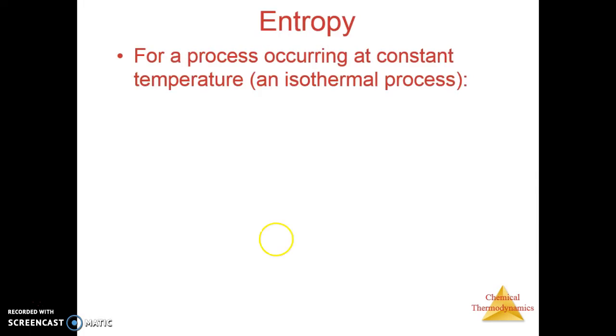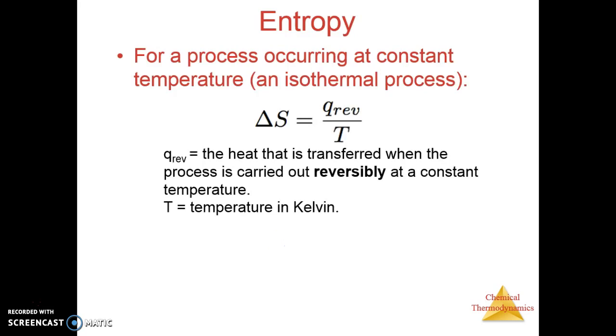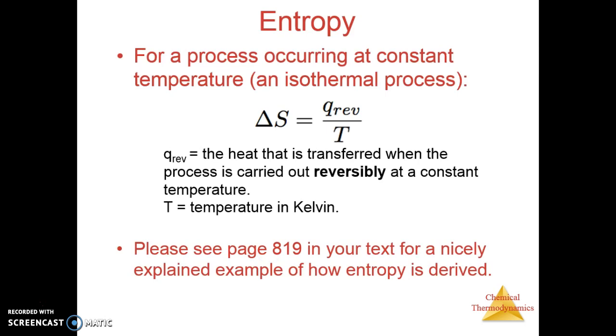For a process that occurs at constant temperature, an isothermal process, the change in entropy is equal to the heat that's transferred when a process is carried out reversibly divided by the temperature at which that process is carried out. There is a really nice explanation in your textbook about the idea of entropy and how it's derived. I also have some additional videos linked on the website, including one from Bozeman Science.